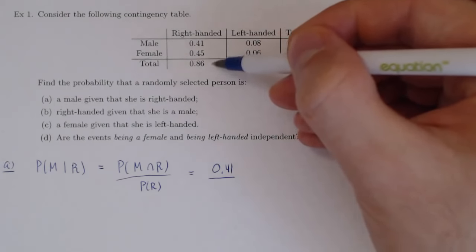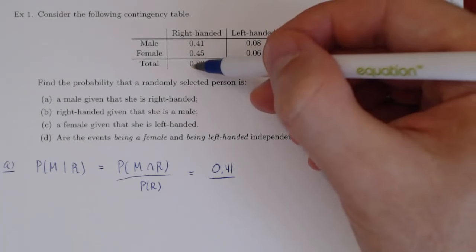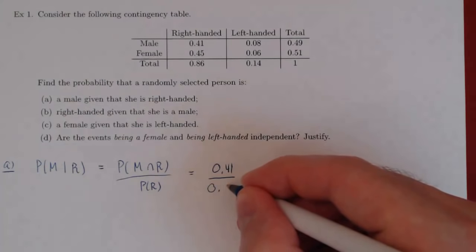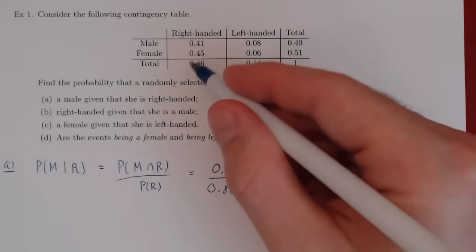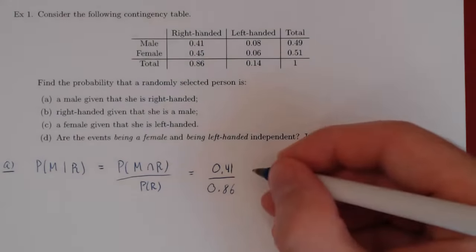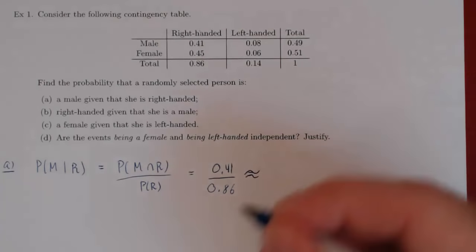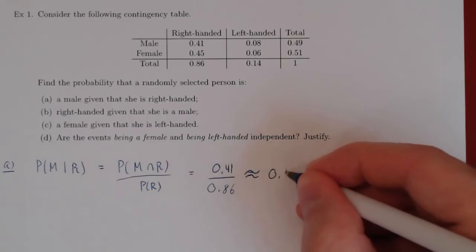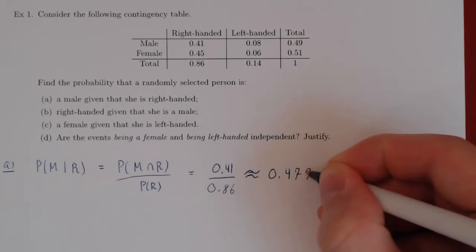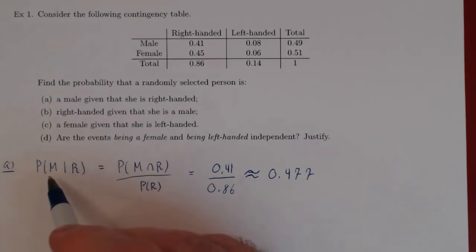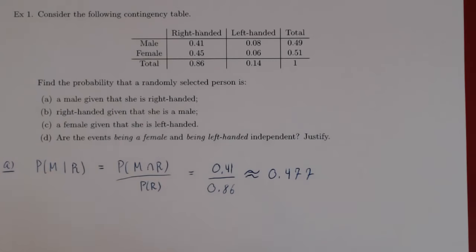These are the proportions for the males that are right-handed and the females that are right-handed, so in total 0.86 — that is, 86% of our sample — gives us the proportion of people that are right-handed. If you take your calculator and compute 0.41 divided by 0.86, you get approximately 0.477, so about 47.7% of people will be male given that they are right-handed.